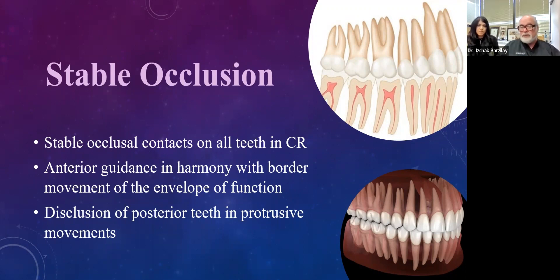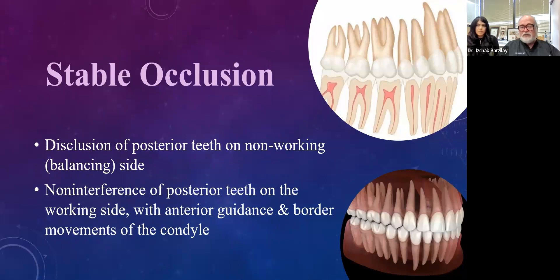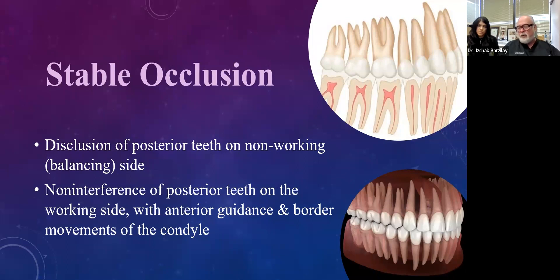There are variations on this, and there are very functional occlusions that may not relate to this, but we like to keep the concept of stable occlusion in mind: disclusion of posterior teeth on the non-working or balancing side, and non-interference of posterior teeth on the working side with anterior guidance and border movements of the condyle. In just a moment we'll go into the workup for occlusion assessment.